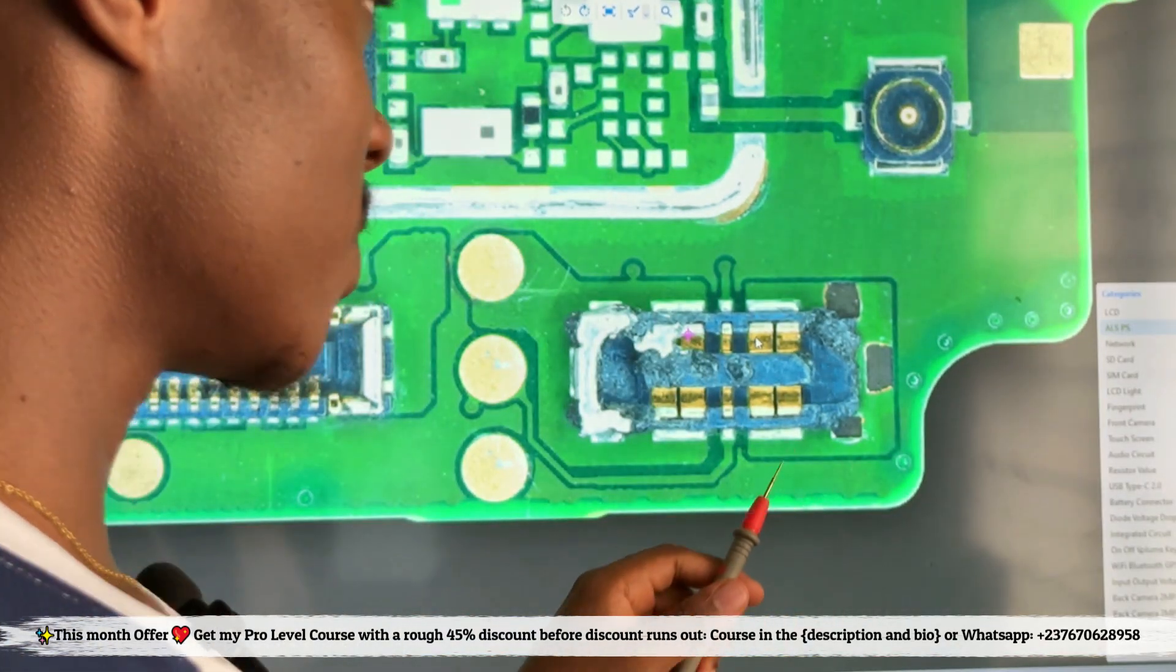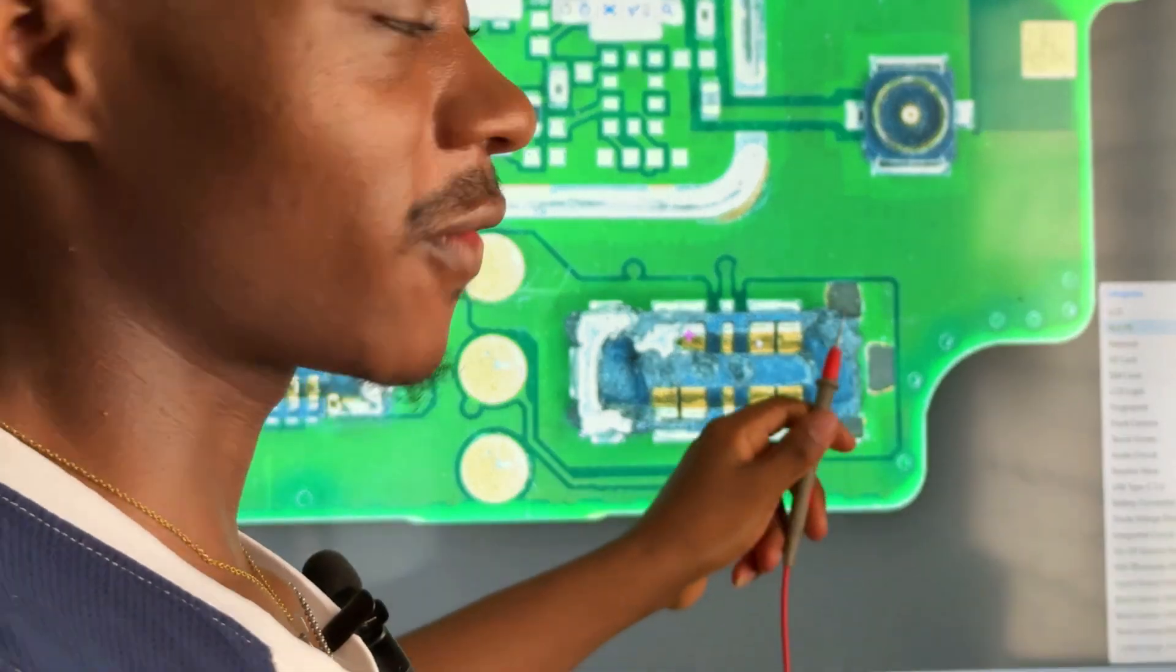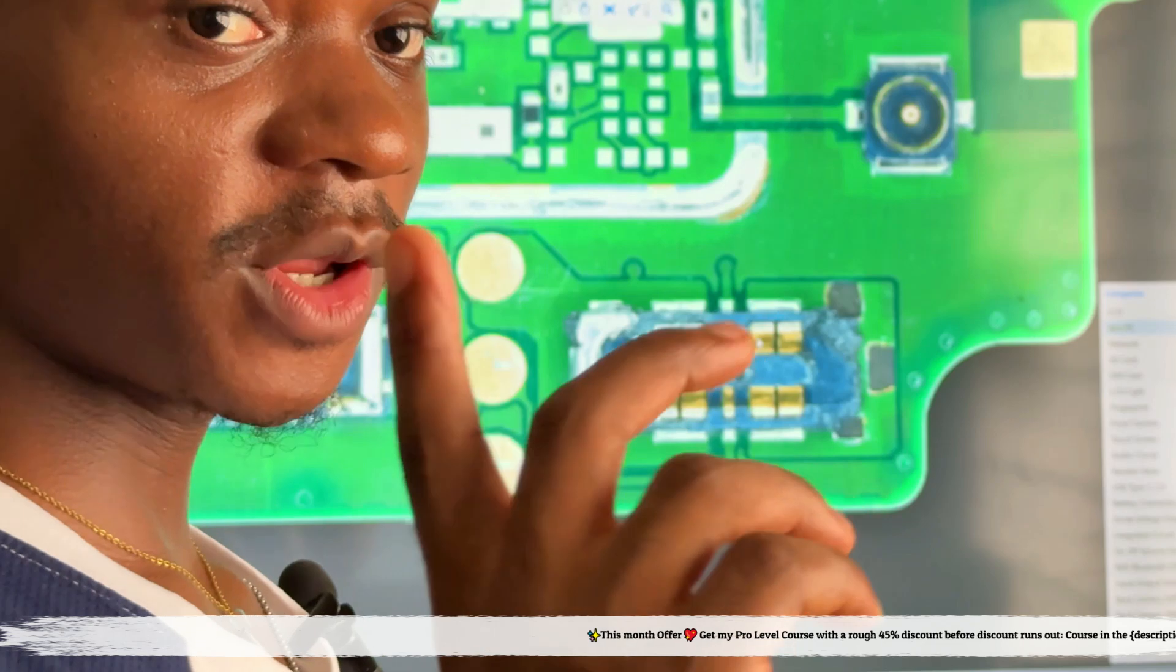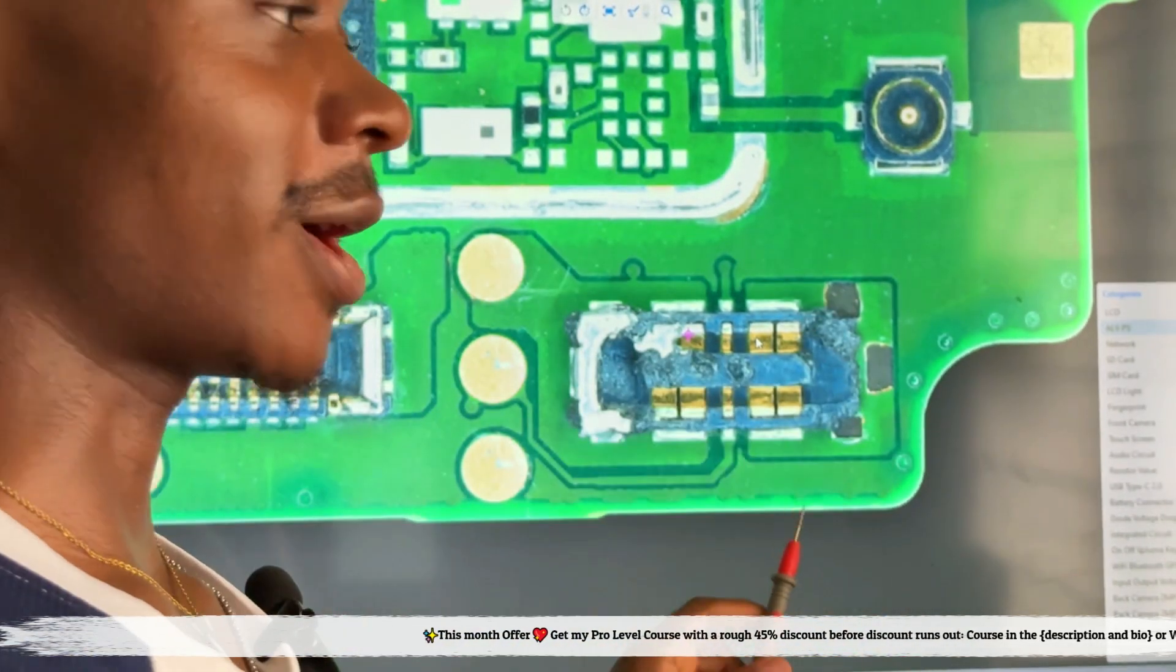I always see posts online asking what they should do when the solder point peels off the PCB. If you don't know what to do in these cases, you still need to learn, and that's why I'm giving you this lesson right here.